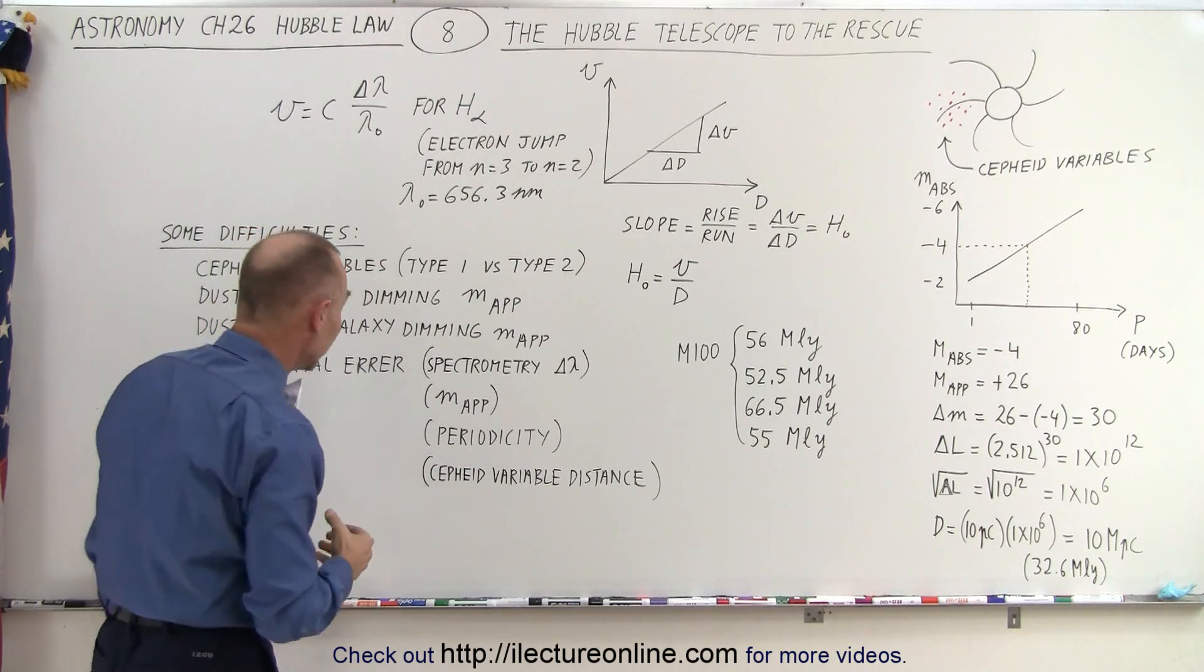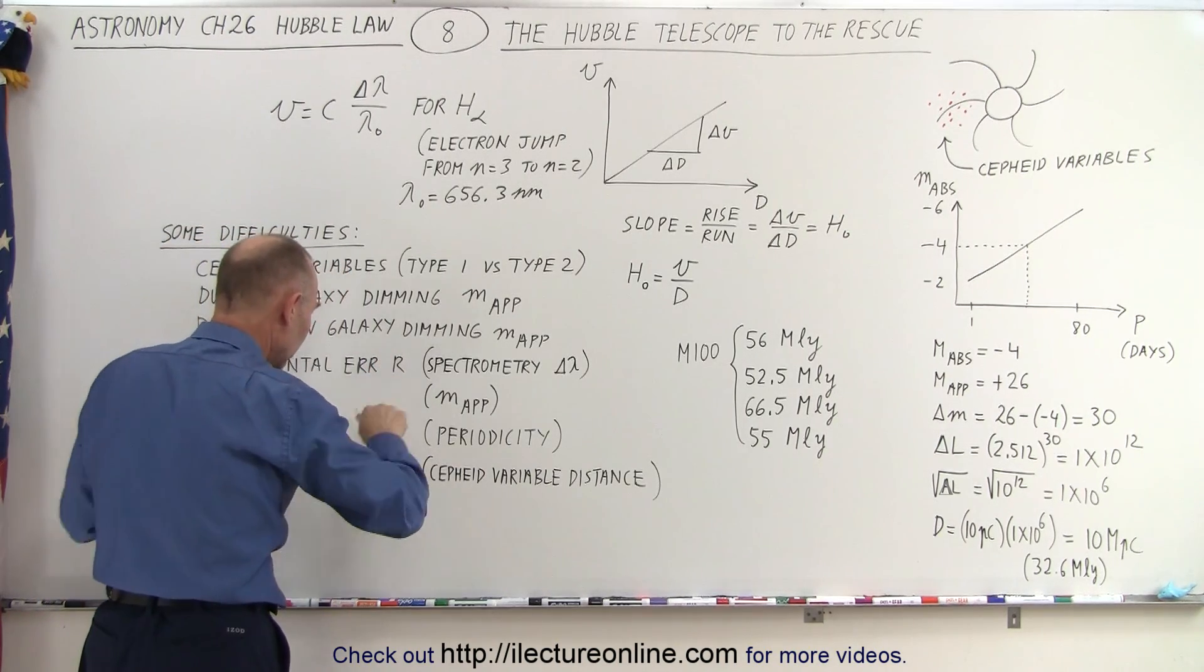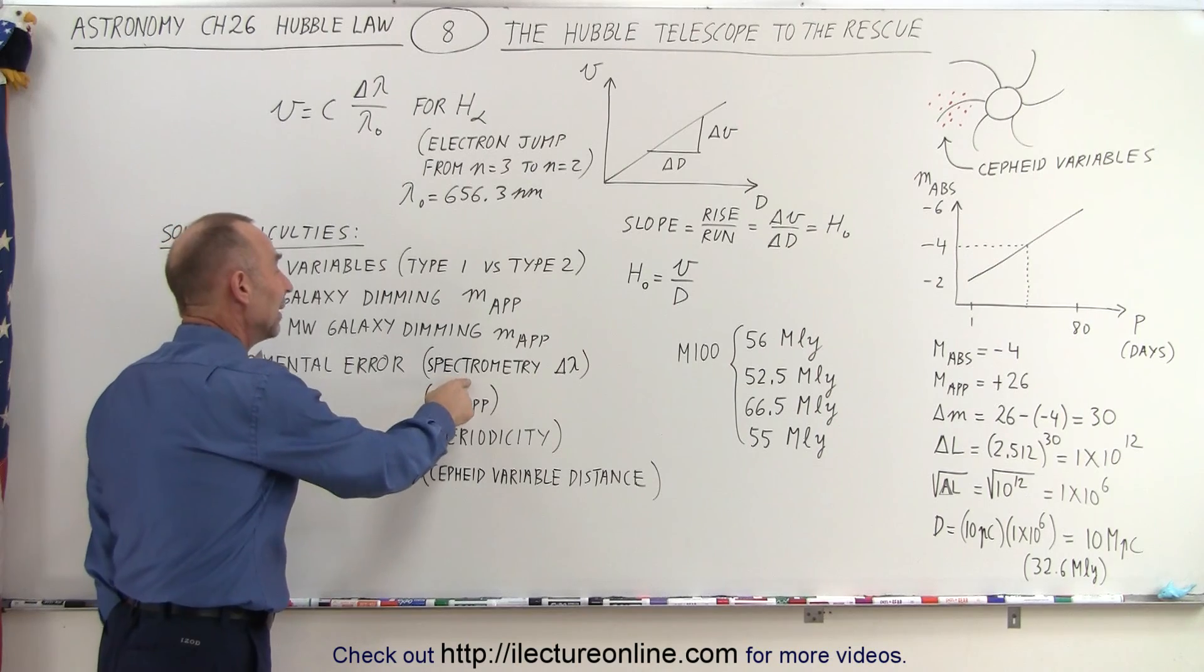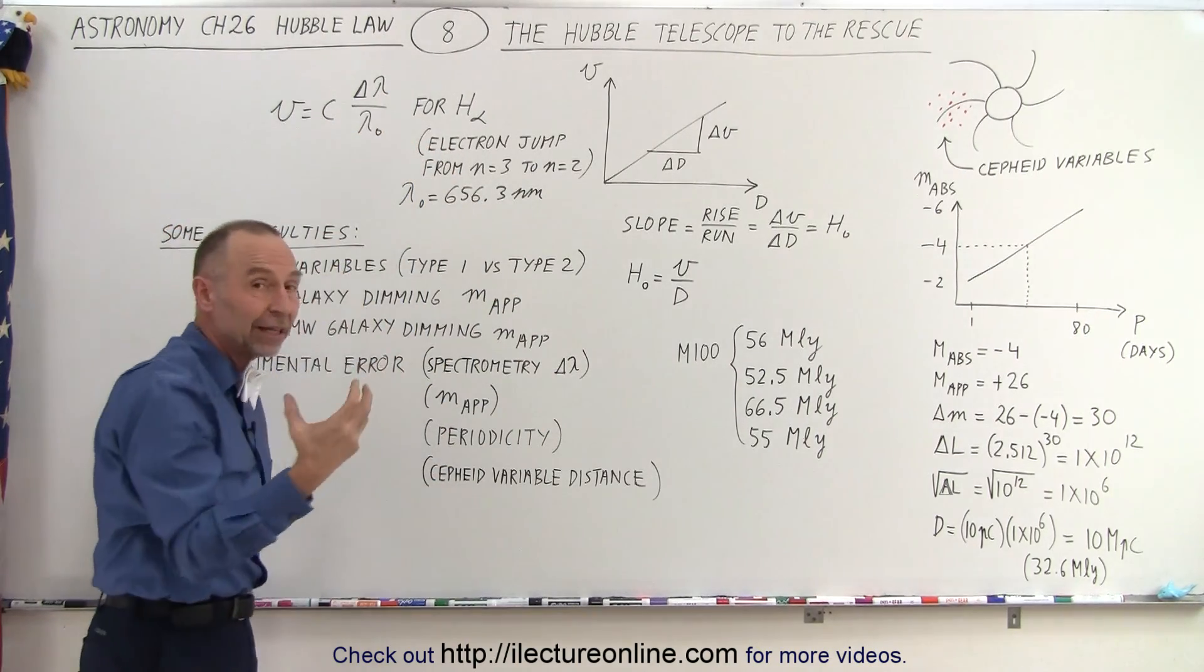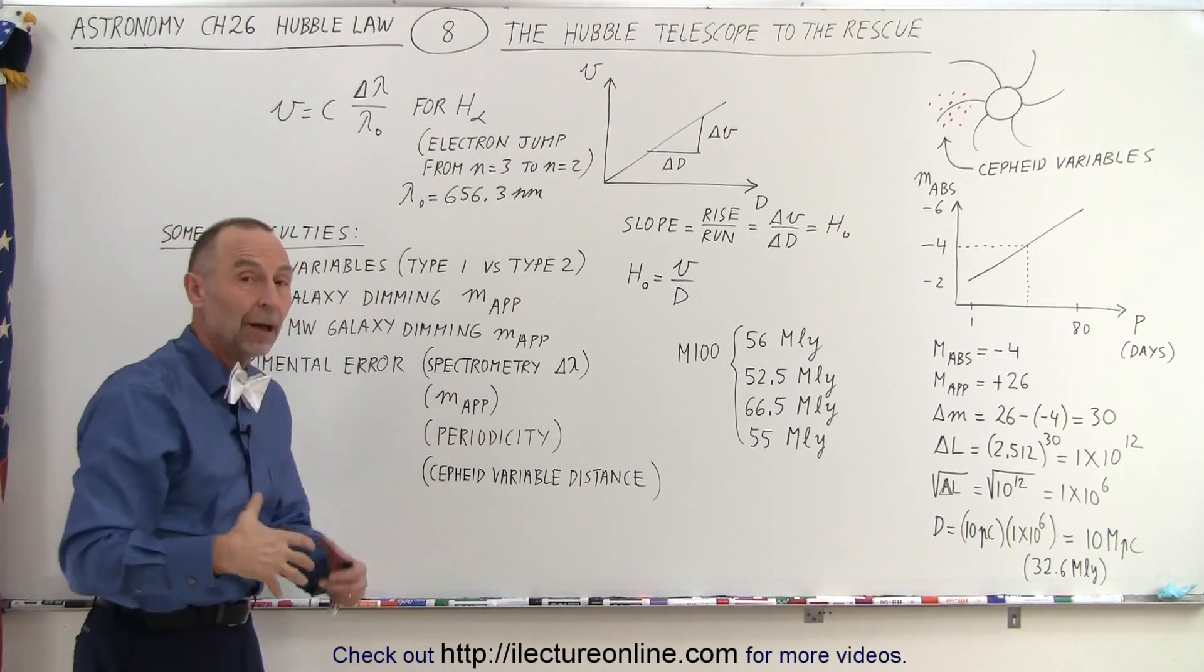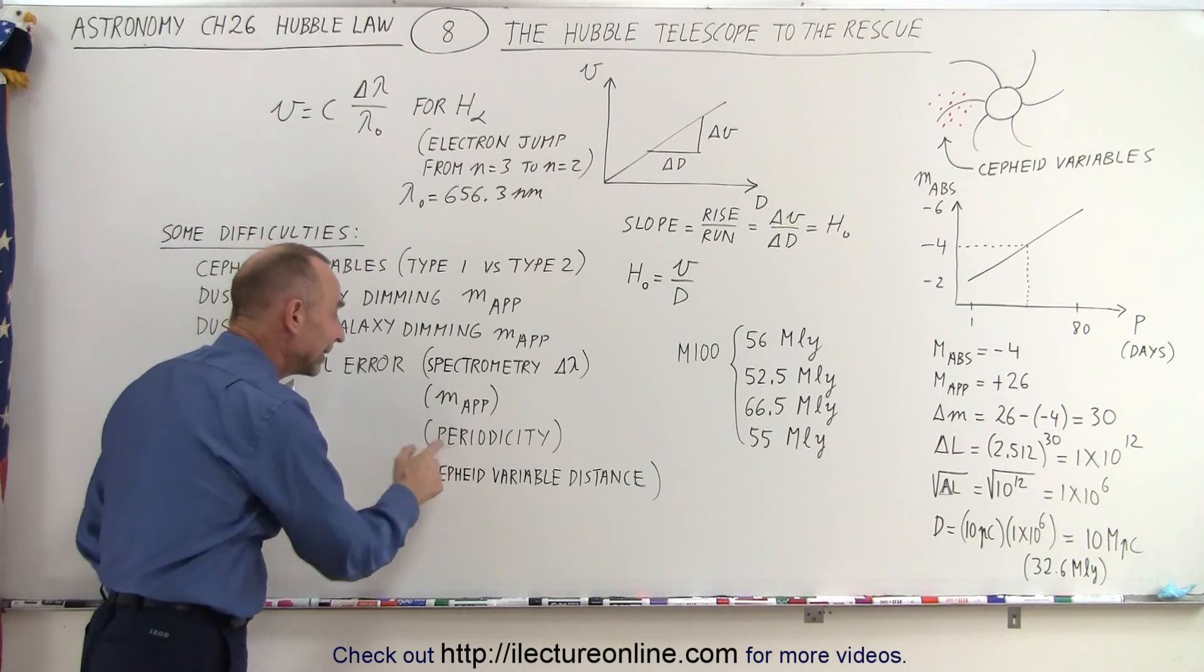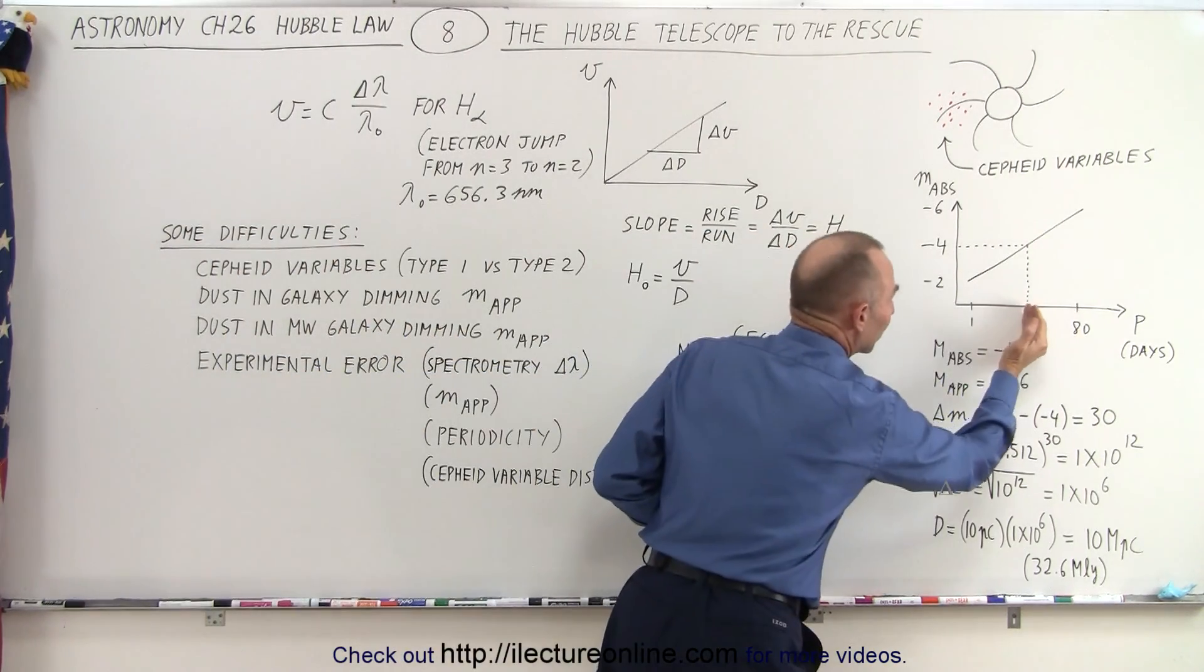Then there's some additional error. You can make errors in spectrometry in measuring the actual wavelength that we're receiving. We have errors in the measurement of the apparent magnitude because we use different filters and we do calculations and we don't always get those numbers quite right. We may not get the periodicity quite right so that we may not be right exactly where we think we are.